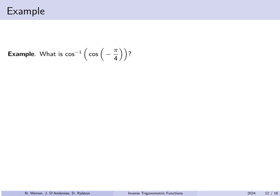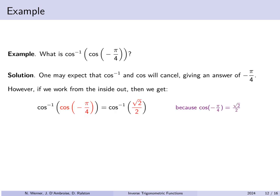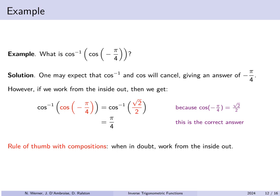However, this cancellation property doesn't always hold. If you have an inverse trig function composed with its trig function in the opposite order, you can't always just cancel them out. For example, what is the arc cosine of the cosine of minus pi over 4? You might think they just cancel to give minus pi over 4, but the arc cosine of something must be between 0 and pi, so it can't be minus pi over 4. Working from the inside out: cosine of minus pi over 4 is root 2 over 2, and arc cosine of root 2 over 2 is pi over 4.